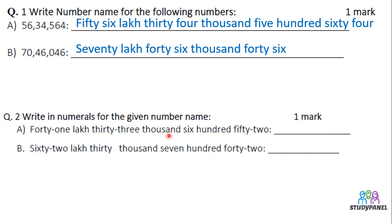33,000 — how do we write it? If we don't understand what to write, we can add a single number. It is 652. So we will write it like this: 41 lakh. If you know how many zeros to write — 41 lakh has 1, 2, 3, 4, 5 zeros. Then 33,000, then 652 is the smaller number which we can write at the end.